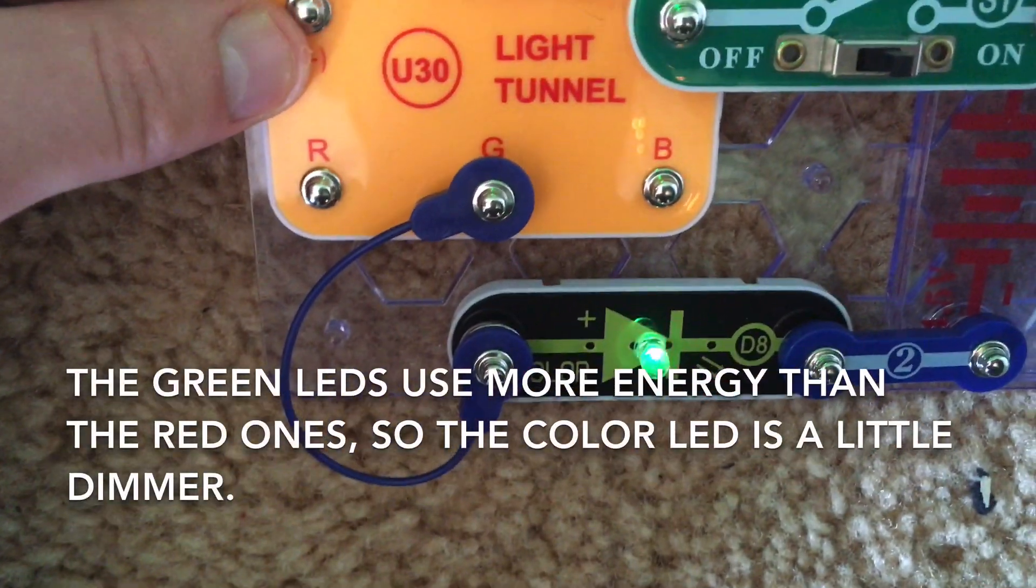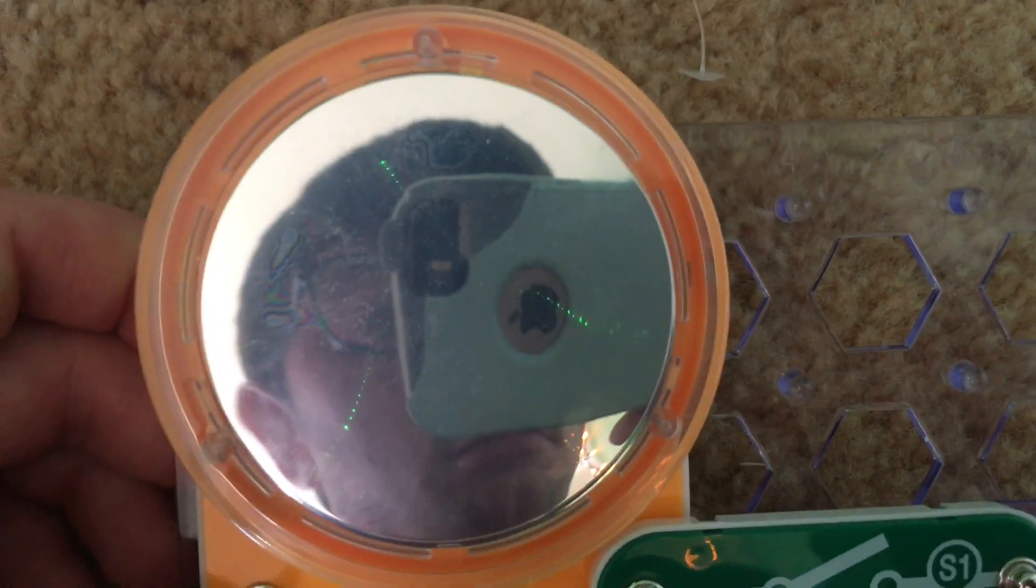The color LED seems a little bit dimmer now. The green LEDs use more energy so there's not as much to go through the color LED.